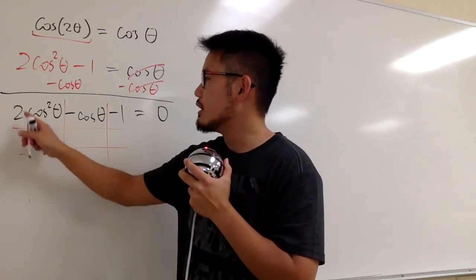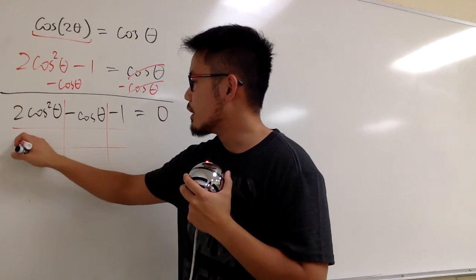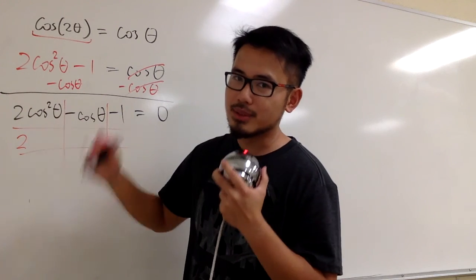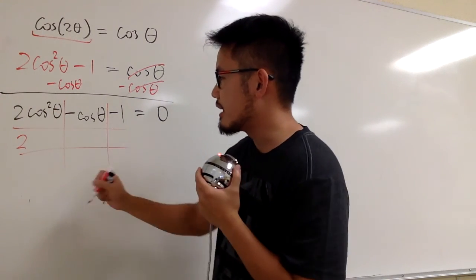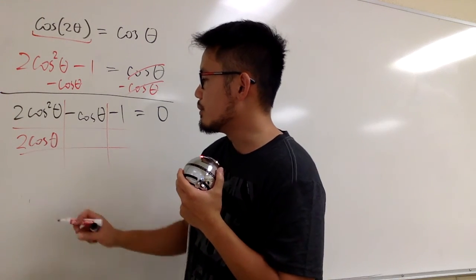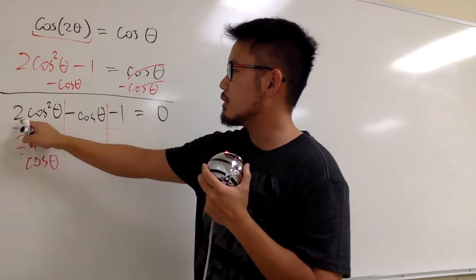So you draw a tic-tac-toe box, and then you ask yourself, what times what will give us 2 cosine squared θ? Well, we know 2 and 1 give us the 2, right? So I will have 2 and 1. And then, cosine θ times cosine θ gives us the cosine squared θ. So the first box, let me just put down cosine θ with the 2. And the other one is just the cosine θ. This times this gives me 2 cosine squared θ.